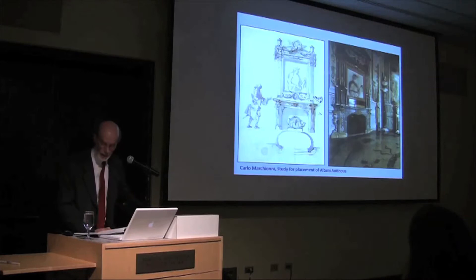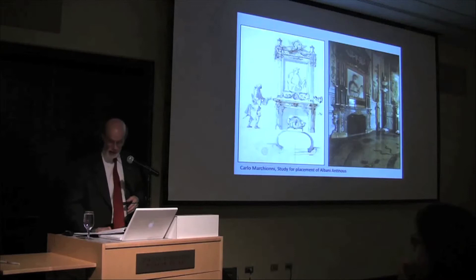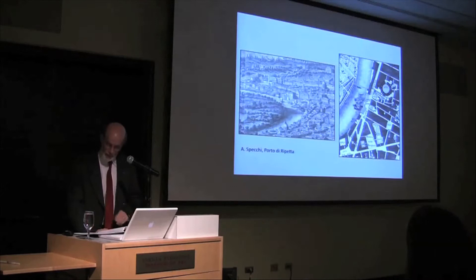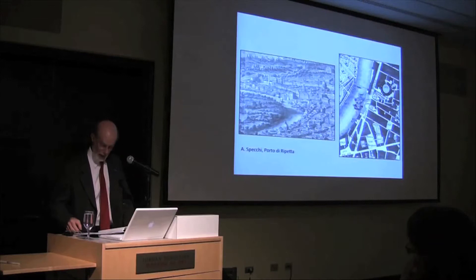In keeping with Vasi's sensitivity to context, we'll begin our discussion of each site with details taken from Nolli's 1748 plan of Rome and Vasi's 1765 panorama. The first and earliest of these is the Porto di Ripetta, the city's upper river port near the mausoleum of Augustus. Designed in 1703 by Alessandro Specchi, the Porto di Ripetta was part of an ambitious program of public works undertaken by Pope Clement XI Albani to stimulate the economy of the Papal States.